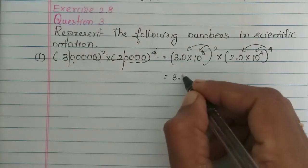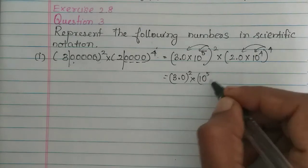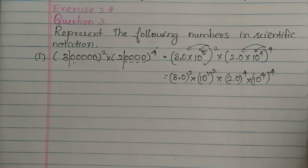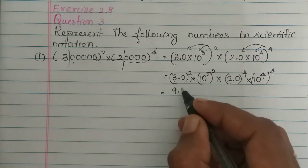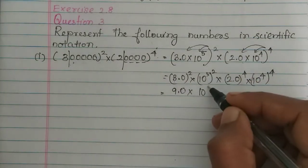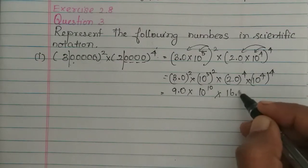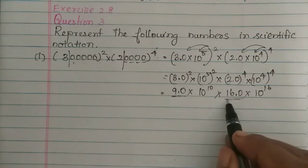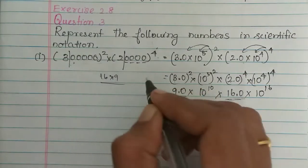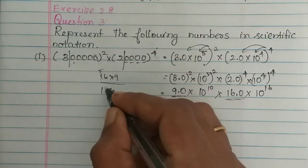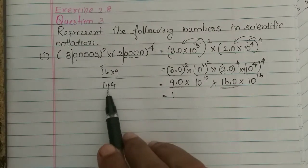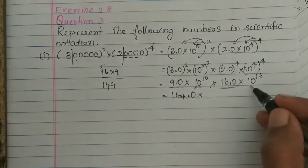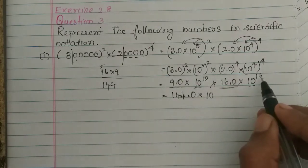So we get 9.0 × 10 to the power 5 — because 3 squared is 9 — and 2 to the power 4 is 16. So we have 16.0 × 10 to the power 4. Now 10 to the power 5 squared gives 10 base with powers added: 10 plus 16 is 26. So we have 16 × 9 which is 144, giving 144.0 × 10 to the power 26.